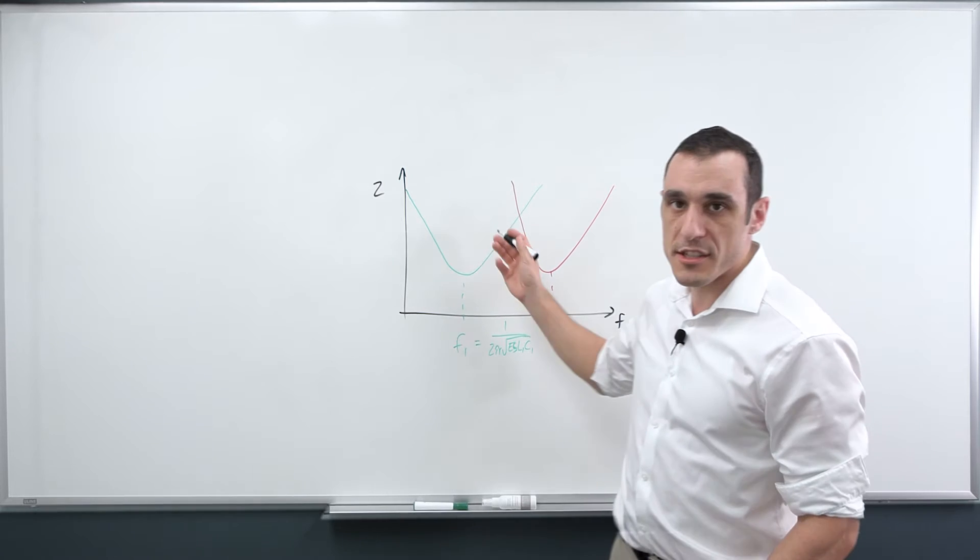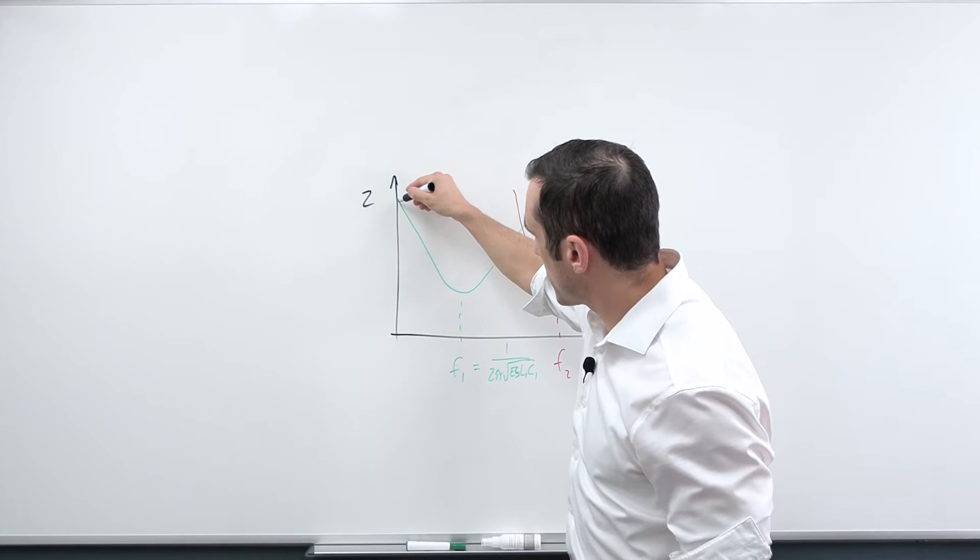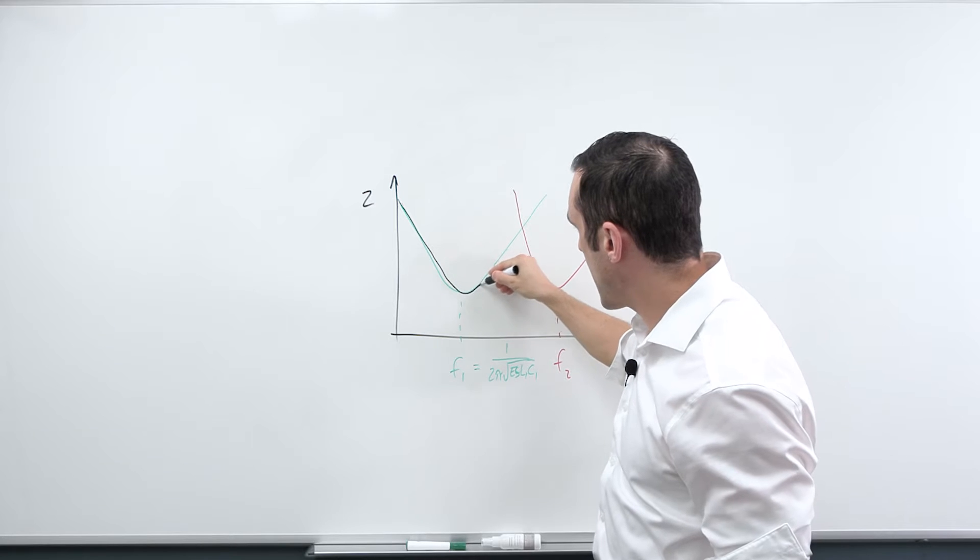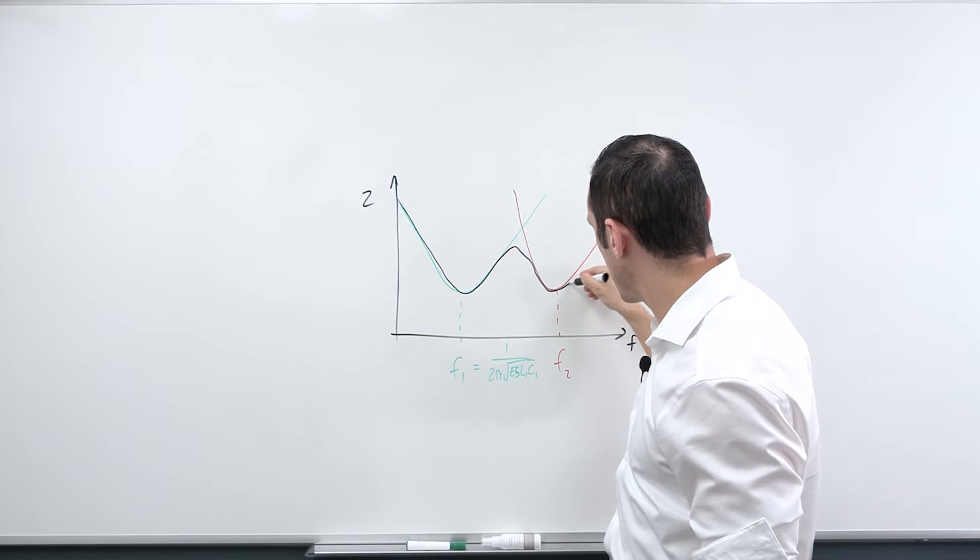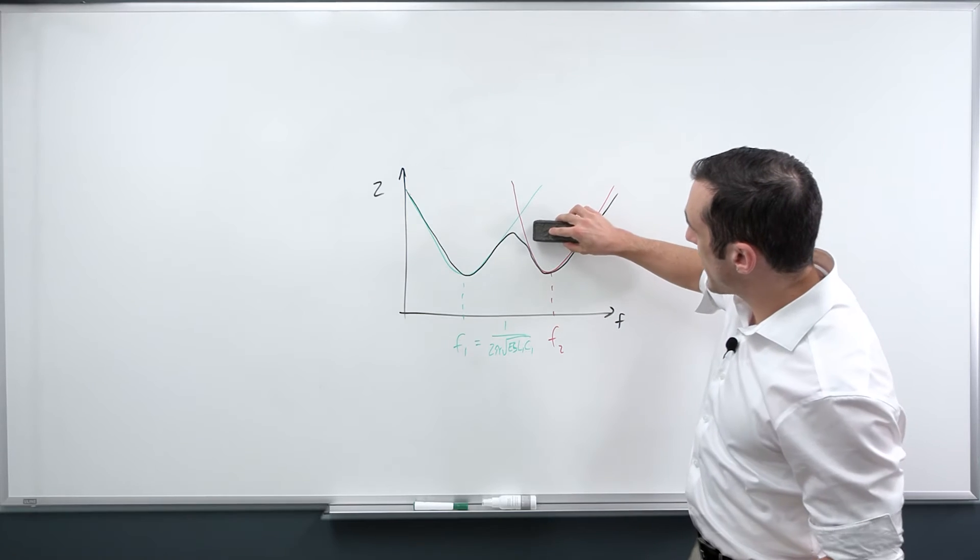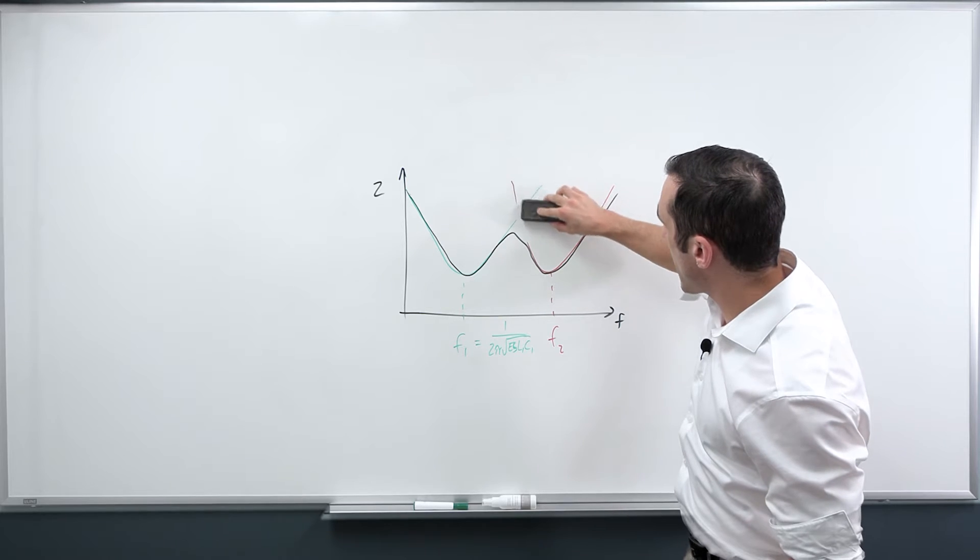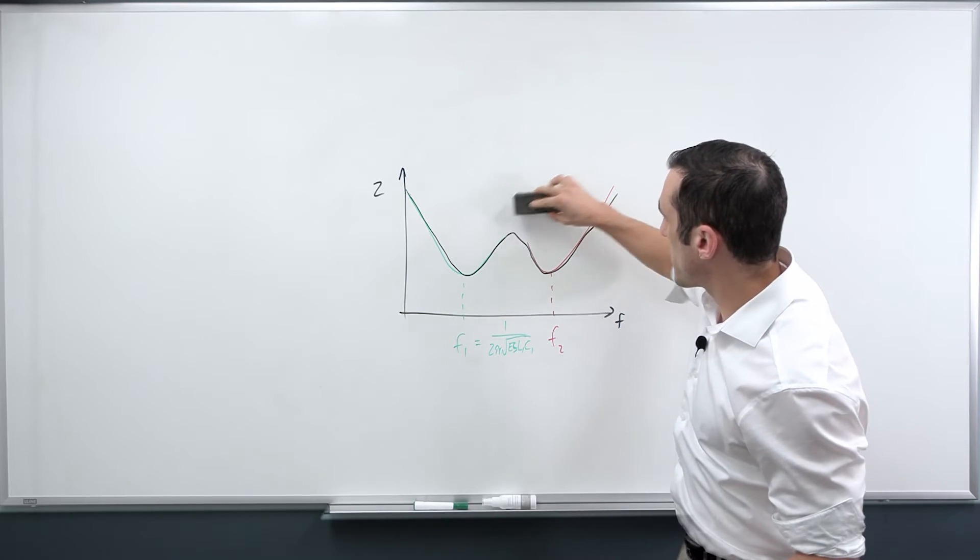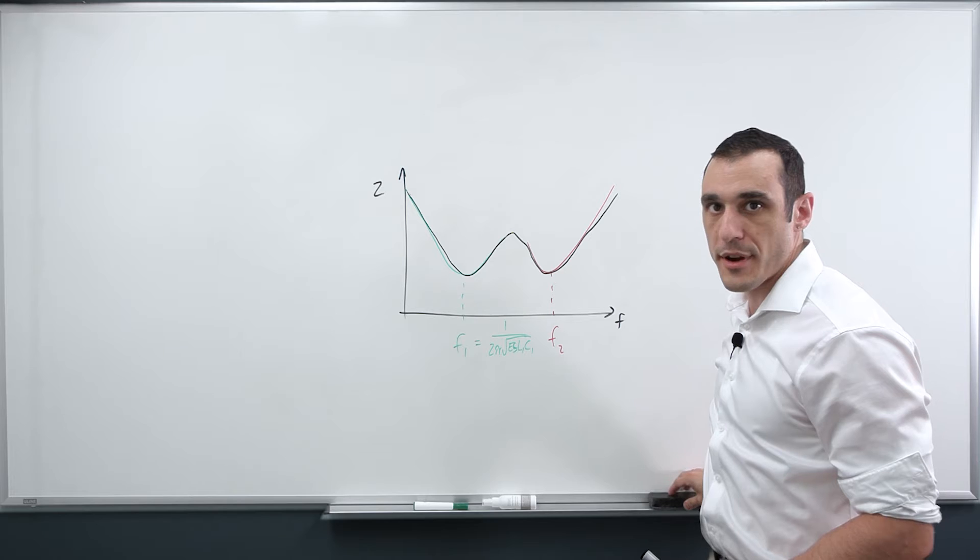So first, let's look at what the equivalent impedance spectrum of this would be. The equivalent impedance spectrum for this PDN would essentially be something like this black curve. The red and the green portion above where this overlap is essentially disappears because we have these two capacitors in parallel.